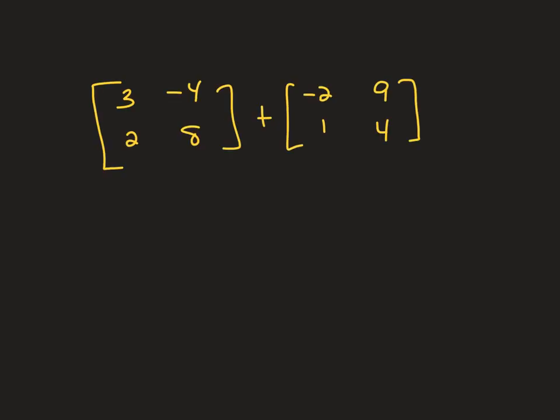First thing we do is add matrices. Now one rule about adding matrices, you can only add matrices if they have the same dimensions. This first matrix is called a 2x2 matrix and this one is also, because it has two rows going this way and it has two columns going that way. Those are called dimensions. They must be the same size in order to add the matrices.